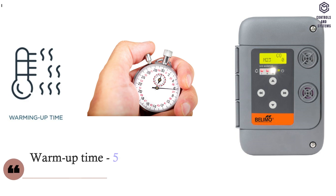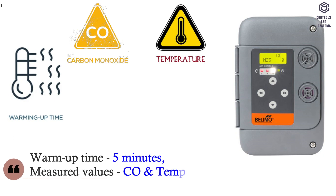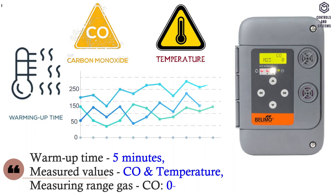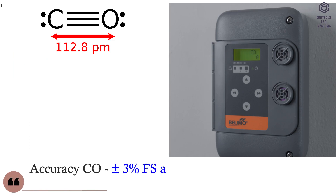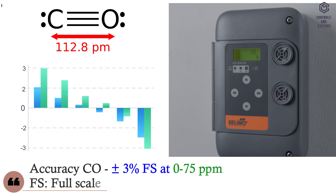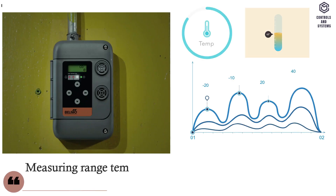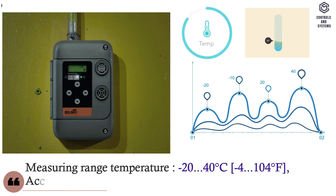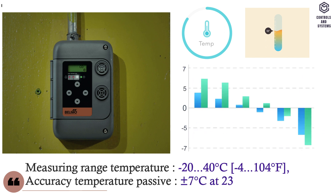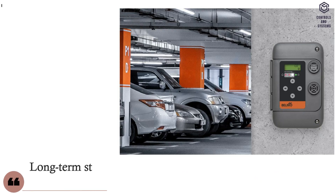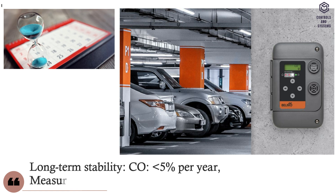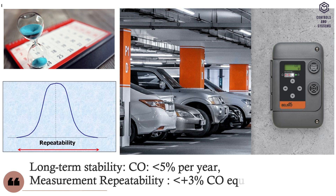Measuring data. Warm-up time is 5 minutes. Measured values are carbon monoxide and temperature. Measuring range for gas is 0 to 250 parts per million. Accuracy of carbon monoxide is plus minus 3 percent Fs at 0 to 75 parts per million, where Fs means full scale of the sensor range. Measuring range for temperature is minus 20 to 40 degrees Celsius. Accuracy temperature passive is plus minus 7 degrees Celsius at 23.5 degrees Celsius. Long-term stability of carbon monoxide is less than 5 percent per year. Measurement repeatability is less than plus 3 percent carbon monoxide equivalent.